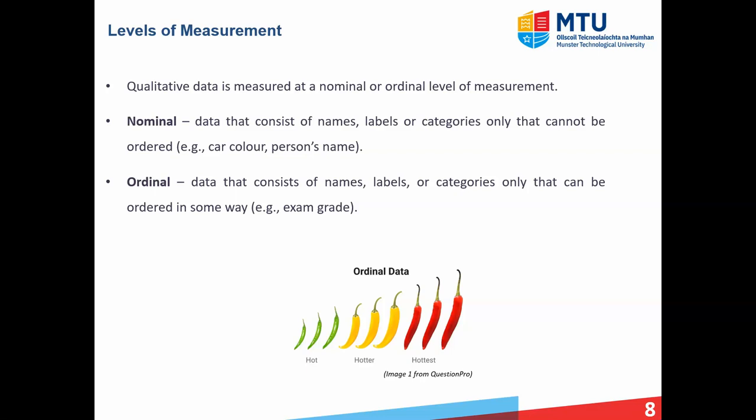So as mentioned, qualitative data can be measured with nominal or ordinal level of measurements. In the case of nominal, that just has, it's just names, labels, or categories. There's no order there. So car colour, blue, red, green. There's no order to the person's name. Same idea. There's no order to the person's names.